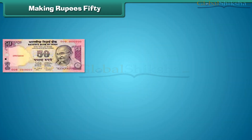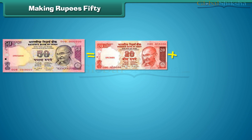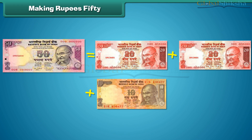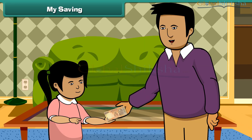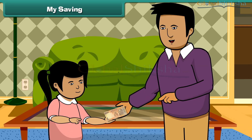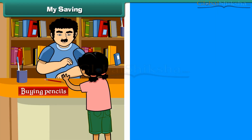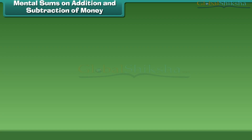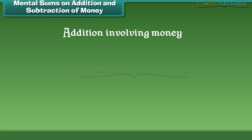A 50 rupees note is equal to the sum of 2 twenty-rupee notes and 1 ten-rupee note. Remy's father gave her rupees 10. She spent rupees 2 for buying pencils and the rest she dropped in her piggy bank. The money kept in her piggy bank is called saving.